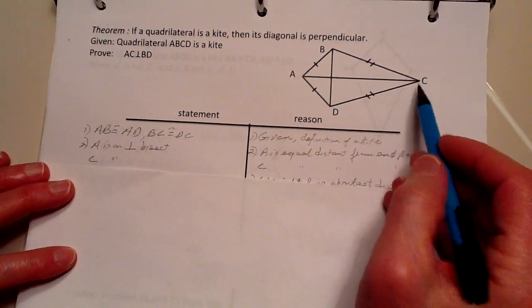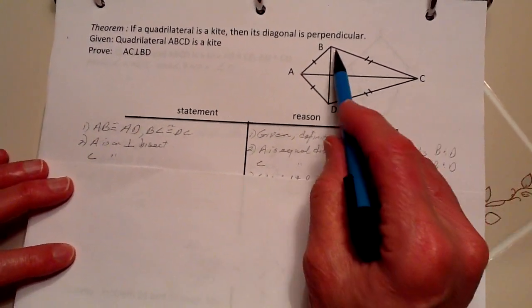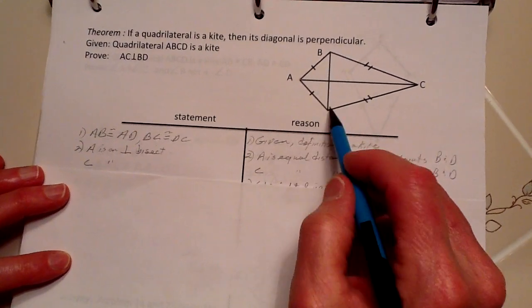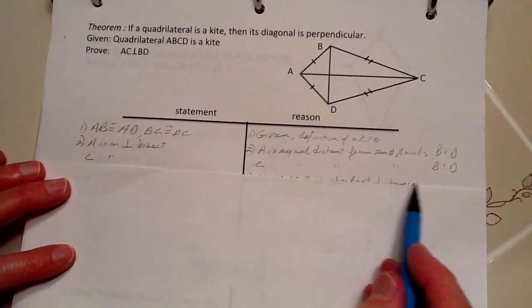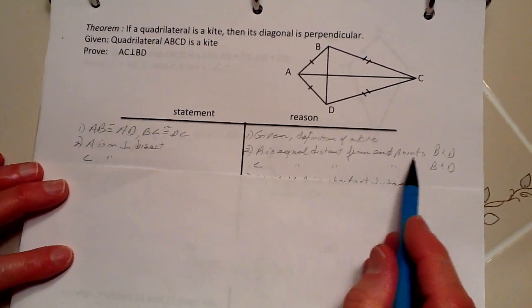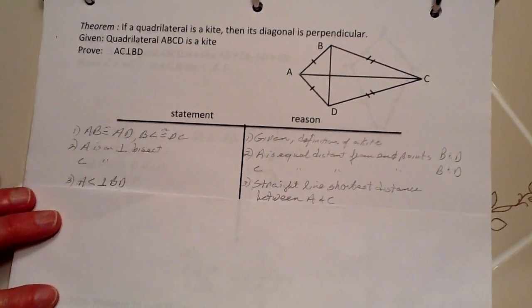Same as for C, it is equal distance from the endpoints of this line, the same line, of B and D. So again, C is equal distance from the endpoints of B and D.